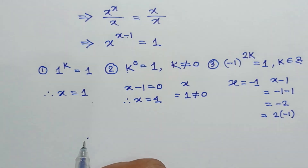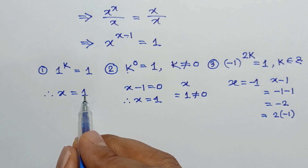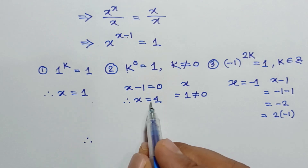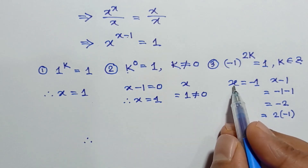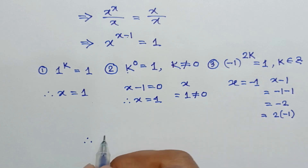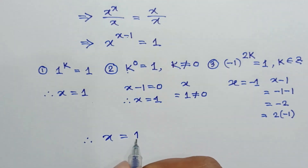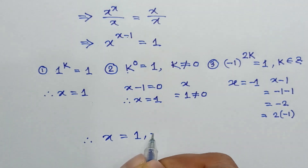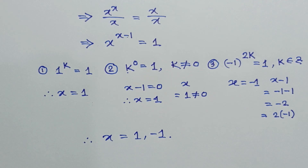So from the first case and second case, x is equal to 1. And from the third case, x is equal to negative 1. Finally, x is equal to 1 and negative 1. This is the solution of this equation.